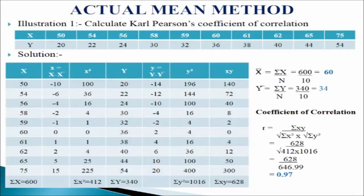Let us understand the actual mean method with the help of the following illustration. We have to calculate Karl Pearson's coefficient of correlation from the given data. We will make a table of seven columns. In the first column we write the values of variable X: 50, 54, 56, 58, 59, 60, 61, 62, 65, and 75. Adding these values we get sigma X equals 600. The arithmetic mean equals sigma X divided by n, so 600 divided by 10 gives us arithmetic mean of 60. In the second column we write x = X minus arithmetic mean.